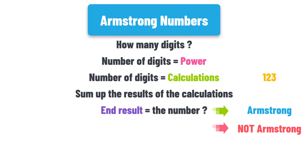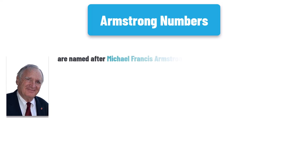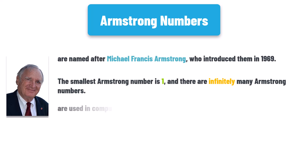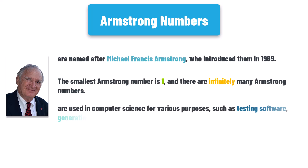This is how to check if a number is an Armstrong number. Armstrong numbers are named after Michael Francis Armstrong, who introduced them in 1969. The smallest Armstrong number is one, and there are infinitely many Armstrong numbers. Armstrong numbers are used in computer science for various purposes such as testing software, generating random numbers, and encryption. Overall, Armstrong numbers are a fascinating mathematical concept that can be explored in many different ways. That's all about Armstrong numbers for now.